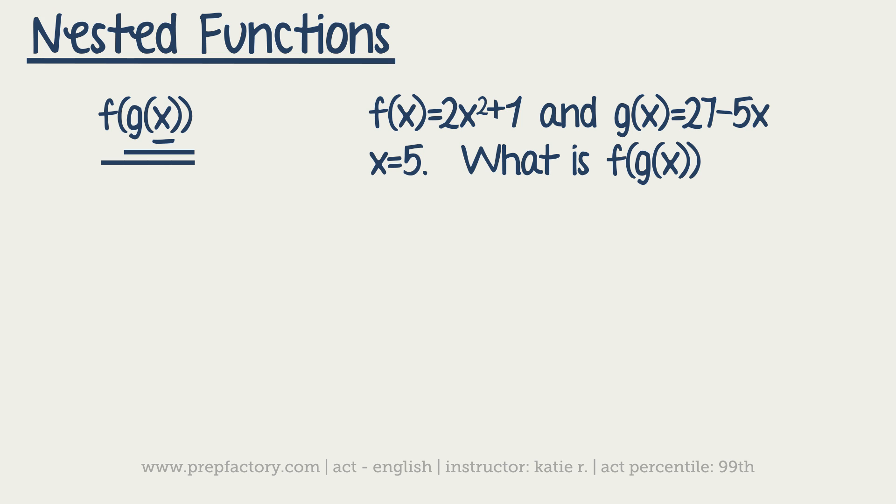Let me write a problem for you guys. In this problem we've got f(x) equals 2 times x squared plus 1, and g(x) equals 27 minus 5x. If x equals 5, what is f of g of x?